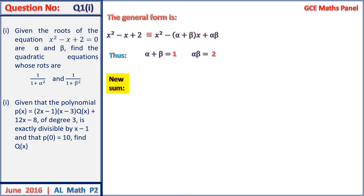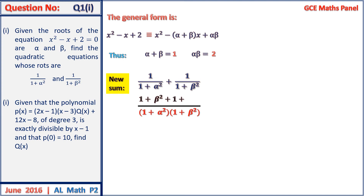We move on to obtain the new sum, which is 1 on 1 plus alpha squared plus 1 on 1 plus beta squared. Looking for the LCM, we obtain 1 plus alpha squared into 1 plus beta squared in the denominator, giving us 1 plus beta squared plus 1 plus alpha squared in the numerator. This simplifies to 2 plus alpha squared plus beta squared, all on 1 plus alpha squared plus beta squared plus alpha beta all squared. Note: it is alpha beta all squared, not alpha beta to the power 4. Most students make a mistake at that particular part.